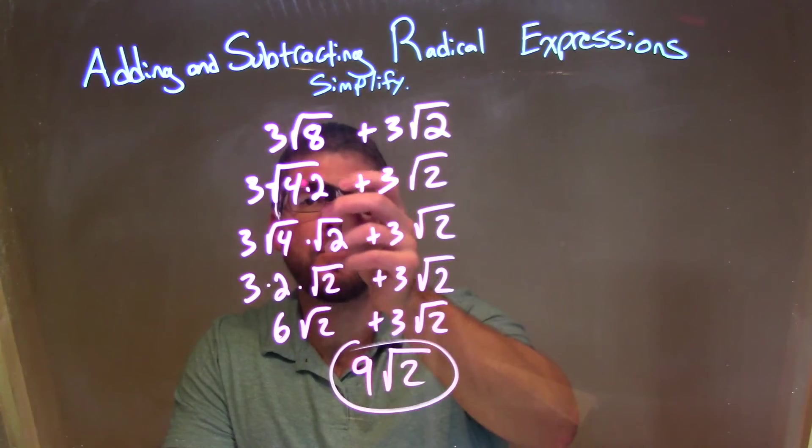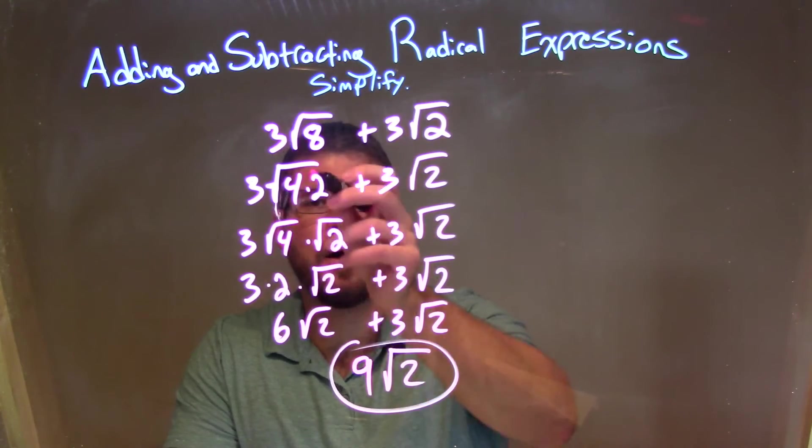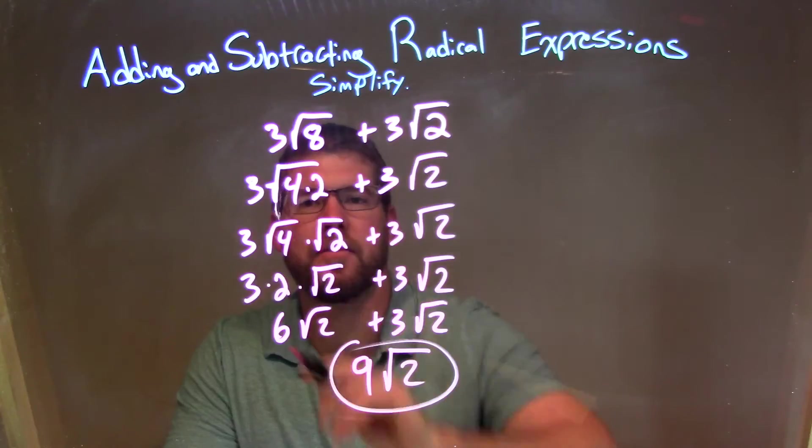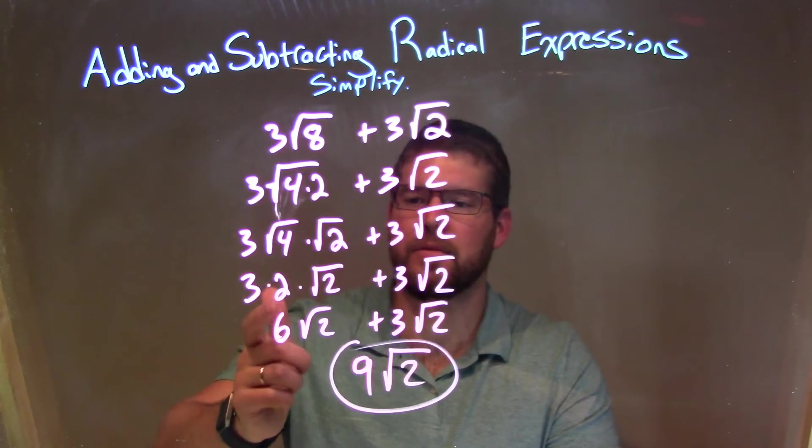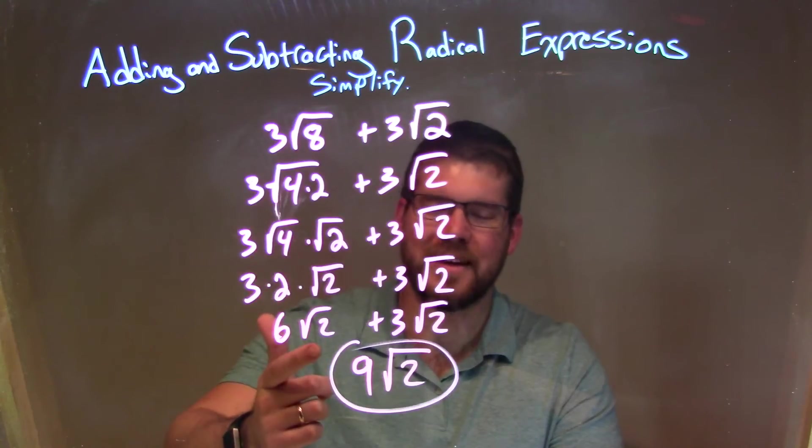And from there I can break apart the square root of this multiplication to 2 different square roots - square root of 4 and the square root of 2. From there I simplify the square root of 4 to be a 2, and then 3 times 2 is 6, bringing the square root of 2 down the whole way.